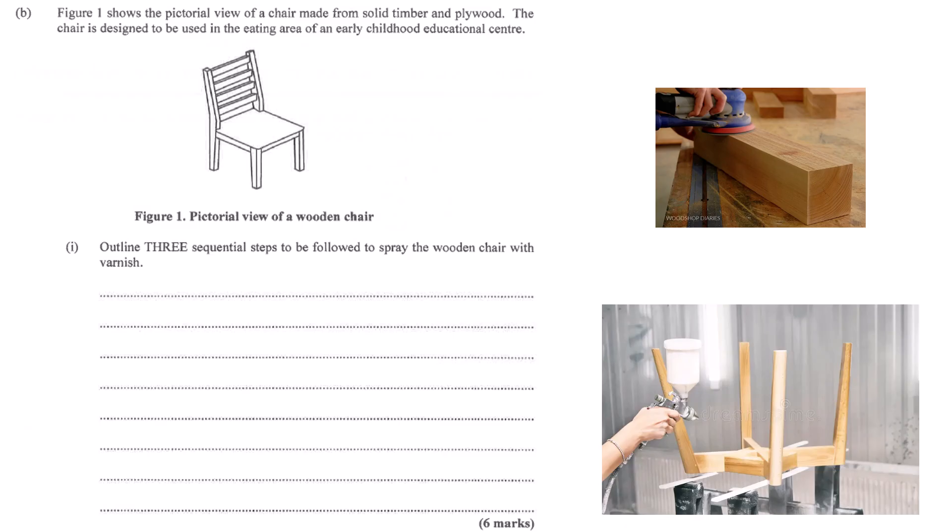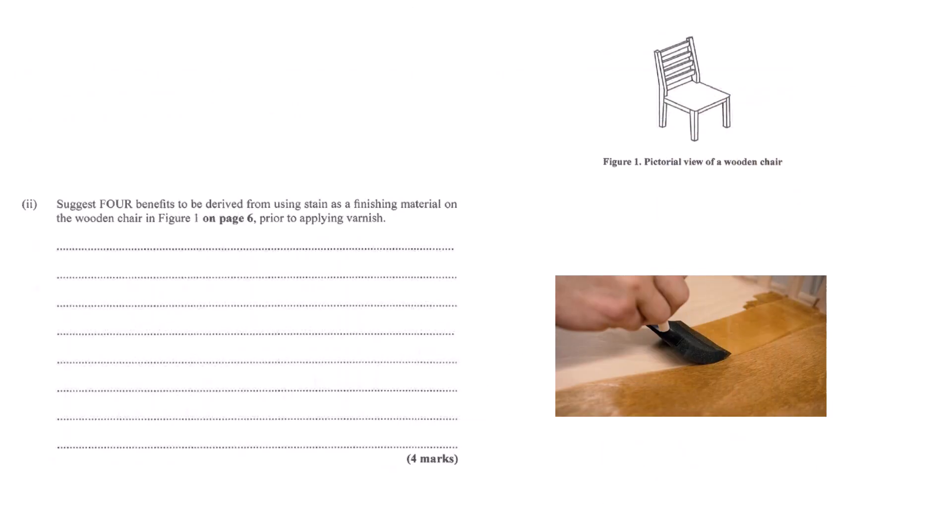Sometimes wood looks colored before the shiny varnish goes on - that's stain, right? Why do that extra step? Staining does a few really useful things. First, it can really make the wood grain pop, enhances the look. Second, you can completely change the wood's color, make a cheap pine look like walnut. Third, it helps even out the color - sometimes wood absorbs finish unevenly, looks blotchy. Stain helps reduce that. And one more thing - the stain can actually act like a primer, giving the varnish a slightly better surface to grip onto.